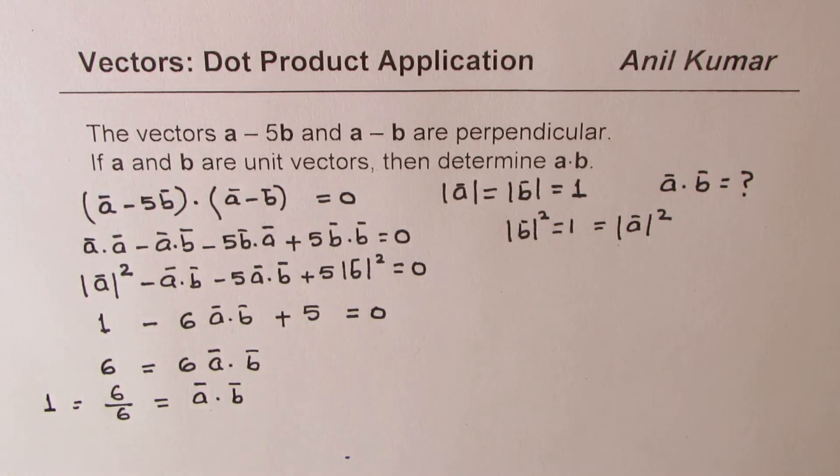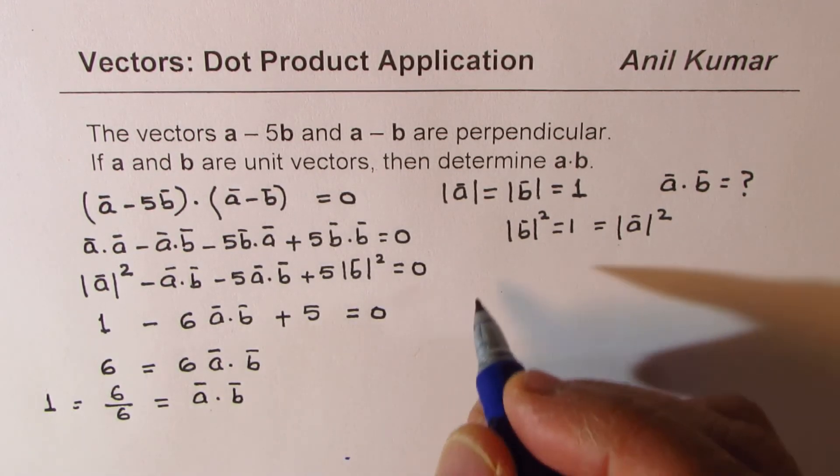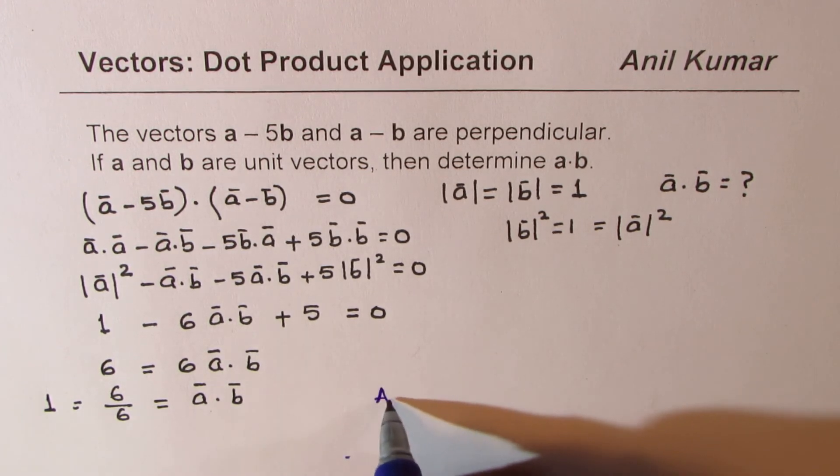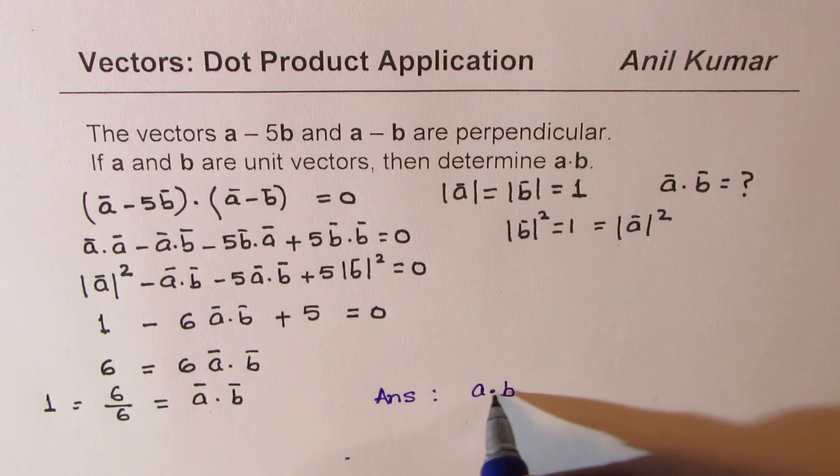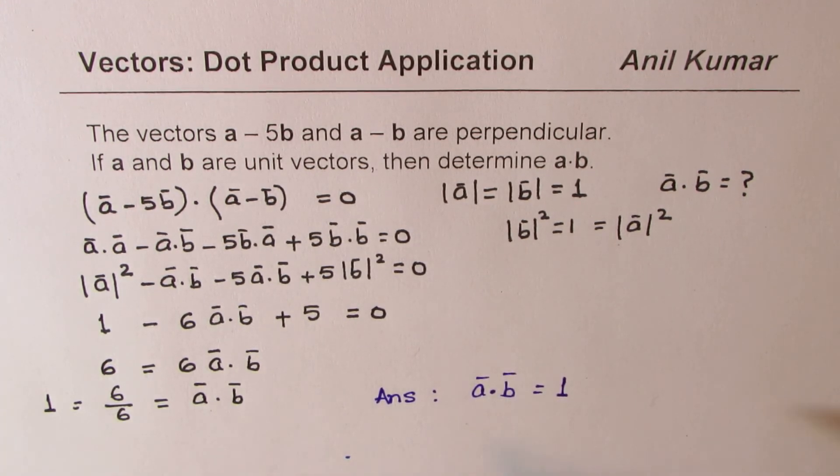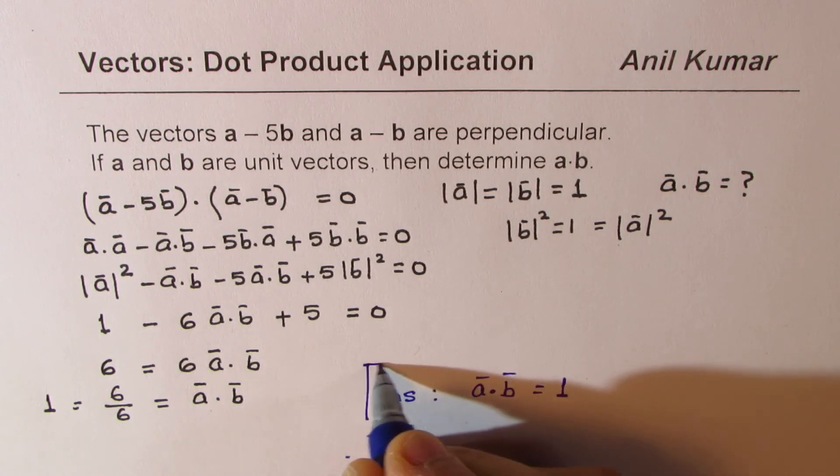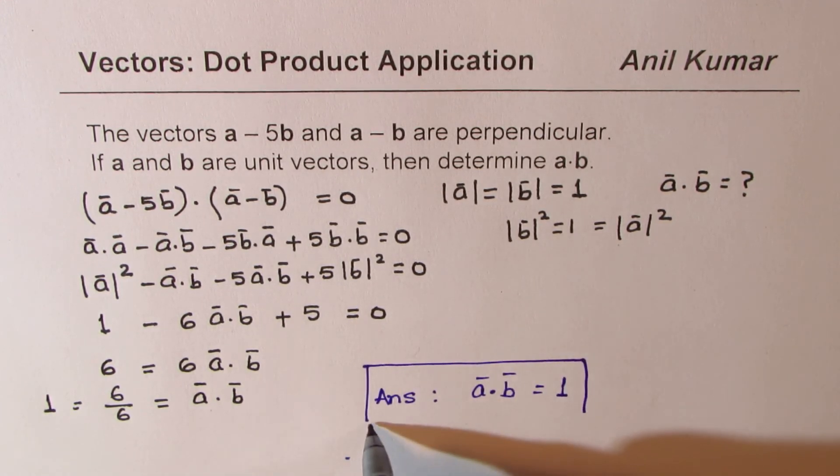Perfect. So A dot B is 1. Now, you need to explain to me that these two are unit vectors, and if their dot product is 1, in that case, what does it mean? Can you find the angle between them?